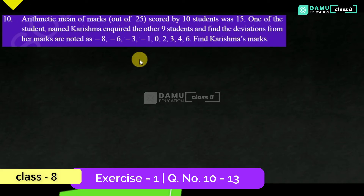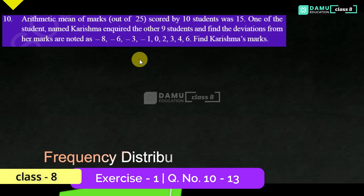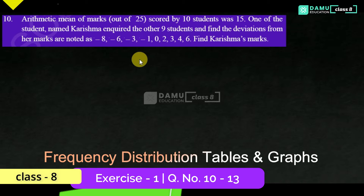Our next question: the arithmetic mean of marks scored by 10 students was 50. One student named Karishma inquired the other nine students and found the deviations from her marks as minus 8, minus 6, minus 3, and so on. Find Karishma's marks. The deviation values from her marks are given — these are the deviation marks.